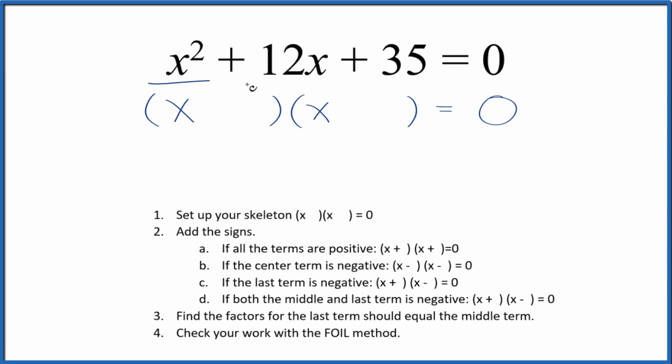Let's factor the equation x squared plus 12x plus 35 equals zero. We'll start with a skeleton equation here, and then we can add the signs into the skeleton.